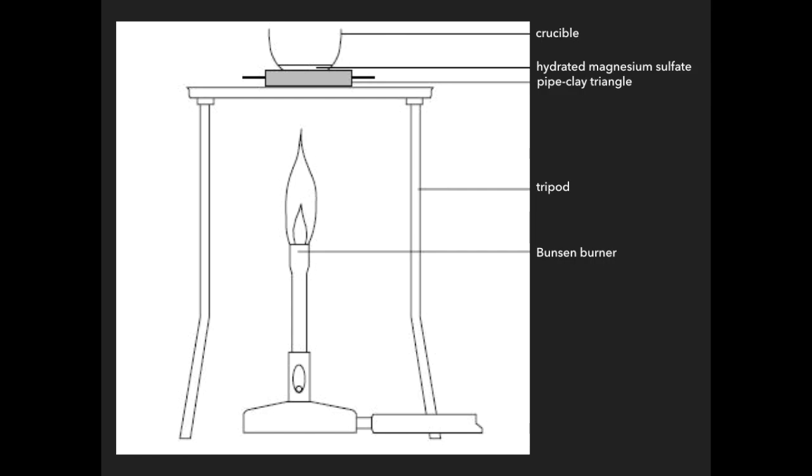That's what it would look like. You can see the crucible at the top there. You've got your hydrated magnesium sulphate in the crucible. You could support that with a pipe clay triangle or put that straight on a gauze if you wanted to. Obviously we've got a tripod and Bunsen as well.